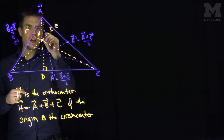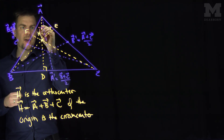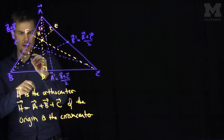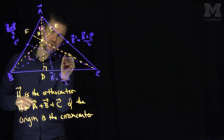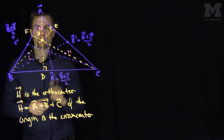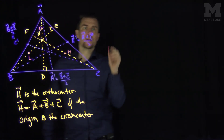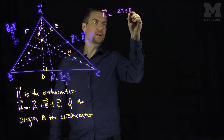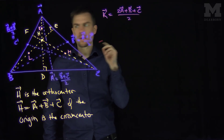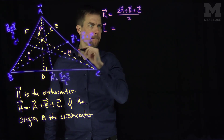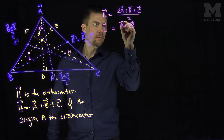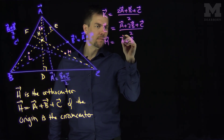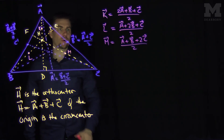Let's look at A. If I go from A to the orthocenter, the midpoint is right over here — let's call that point K. Going from B to the midpoint of the orthocenter gives point L. And the midpoint between C and the orthocenter is point M. So K = (2A + B + C) / 2, L = (A + 2B + C) / 2, and M = (A + B + 2C) / 2.